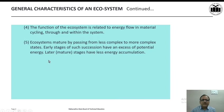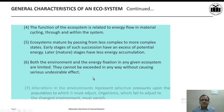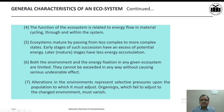Ecosystems mature by passing from less complex to more complex states. Early stages of such succession have an excess of potential energy; after maturity, stages have less energy accumulation. Both the environment and the energy fixation in any given ecosystem are limited and cannot be exceeded without causing serious undesirable effects. Alterations in the environment represent selective pressures upon the population, and organisms which fail to adjust to the changed environment must go.